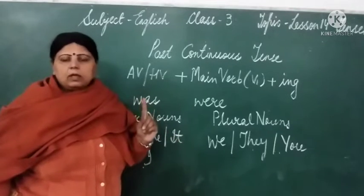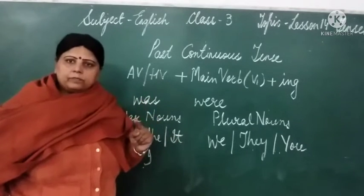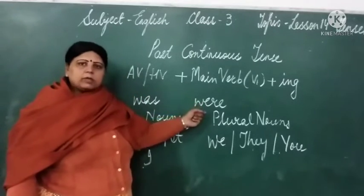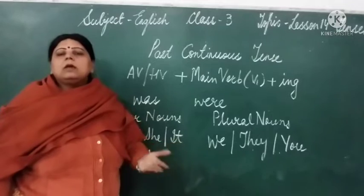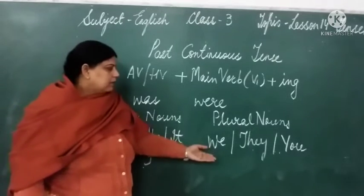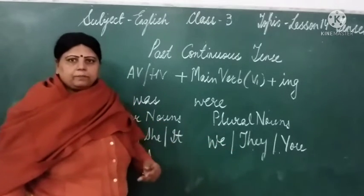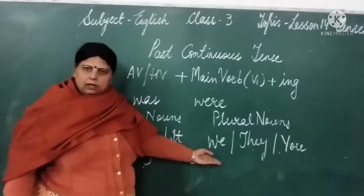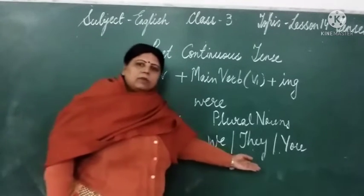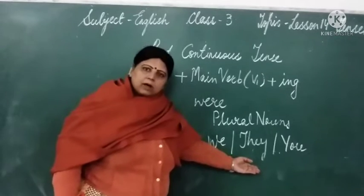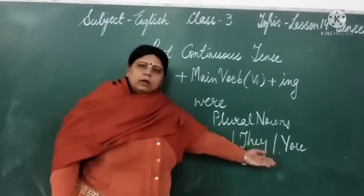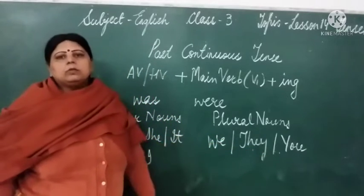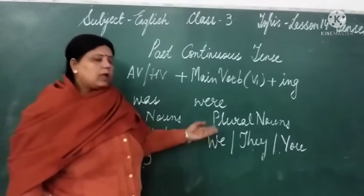Was ka matlab kya hai? One — singular. Aur 'were' hum kahan use karte hain? Jab subject plural hota hai ya we, they, you hote hain. For example: We were going to the market yesterday. They were playing in the park. You were not present in the assembly. To beta, hum 'were' use karte hain.